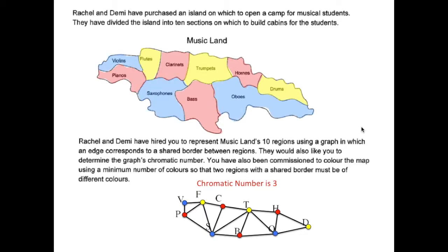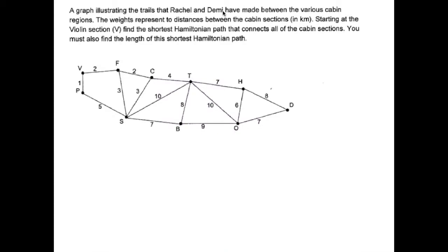That's it for the first part. A graph illustrating the trails that Rachel and Demi have made between the various cabin regions is below. The weights represent the distances between the cabin sections in kilometers. Starting at the violin section V, find the shortest Hamiltonian path that connects all of the cabin sections. You must also find the length of this shortest Hamiltonian path. We're starting with V. We can go to F or to P. P is shorter — it's just one — so I'm going to take the shortest each time I'm given a choice.